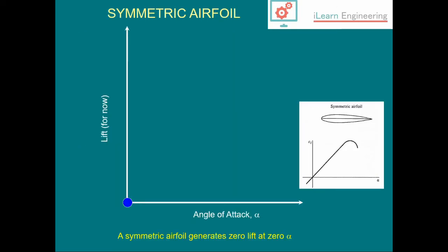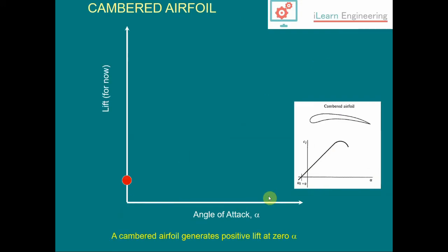In summary, if we have a symmetrical airfoil, the linear portion of the lift curve will go through the origin of the graph. We're not going to produce any lift at zero angle of attack for a symmetrical airfoil. If we move to a cambered airfoil, we are able to produce positive lift at zero angle of attack.